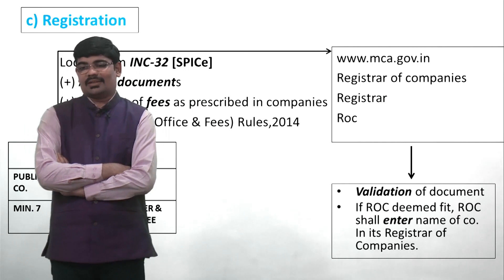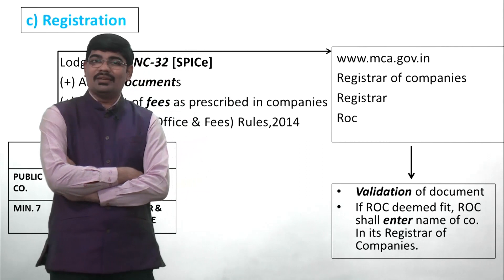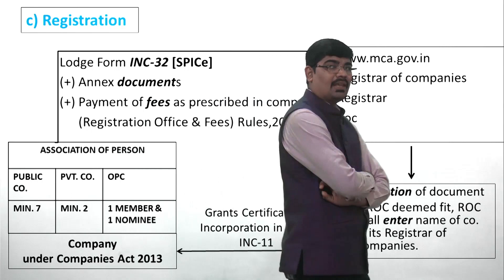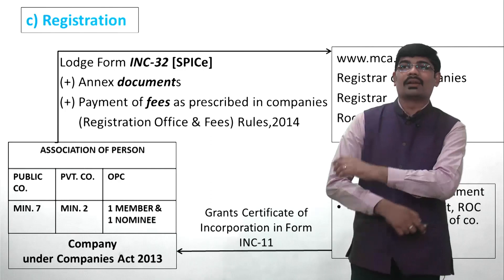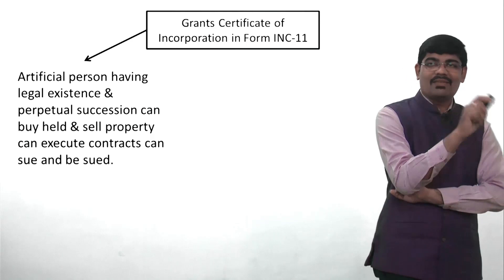ROC does an in-depth analysis, and if everything is found correct, ROC enters the details in the Register of Companies and grants a Certificate of Incorporation in Form INC-11 as proof. On receiving the Certificate of Incorporation, the association of persons converts into a company under Companies Act 2013.